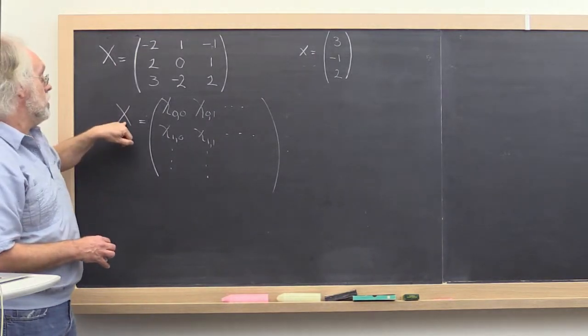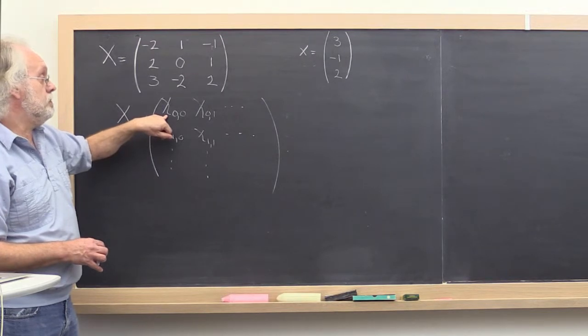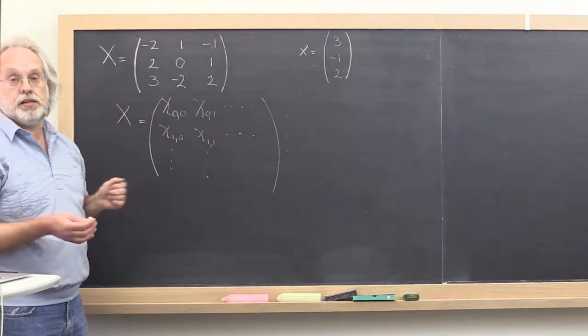Obviously, if this were matrix A, then the corresponding Greek letter might be alpha. And we would have alpha 00, alpha 01, et cetera.